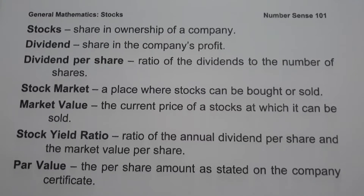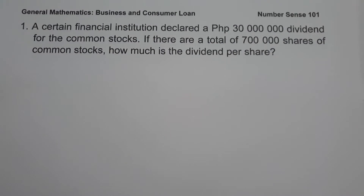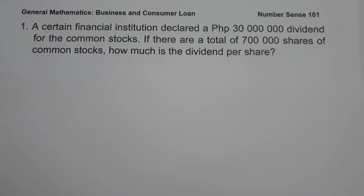Let's start with example number one. A certain financial institution declared a 30 million pesos dividend for the common stocks. If there are a total of 700,000 shares of common stocks, how much is the dividend per share?